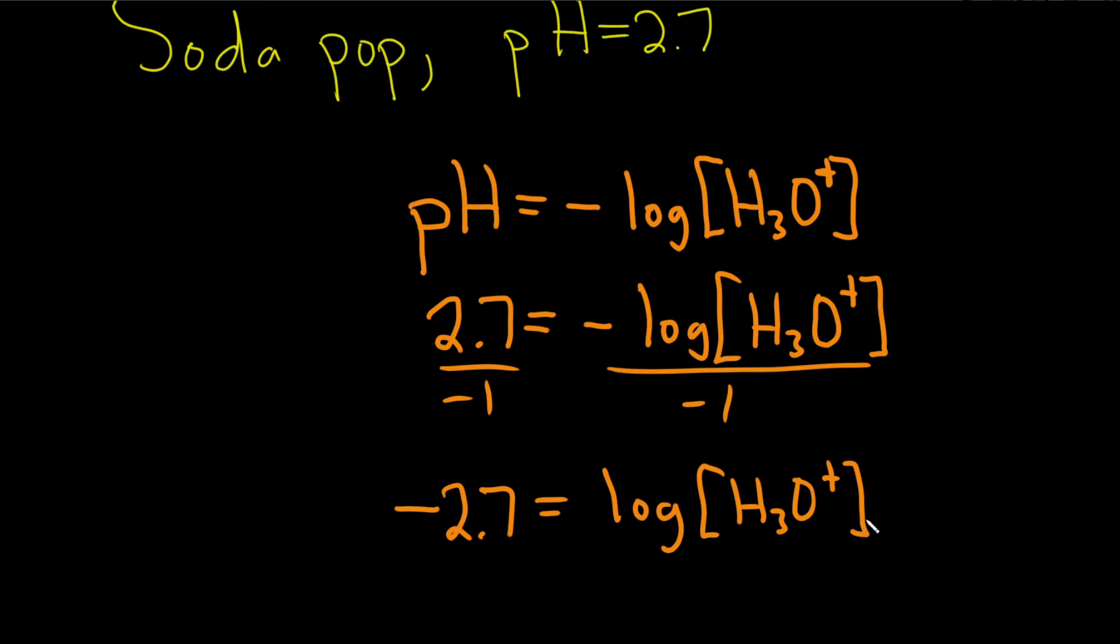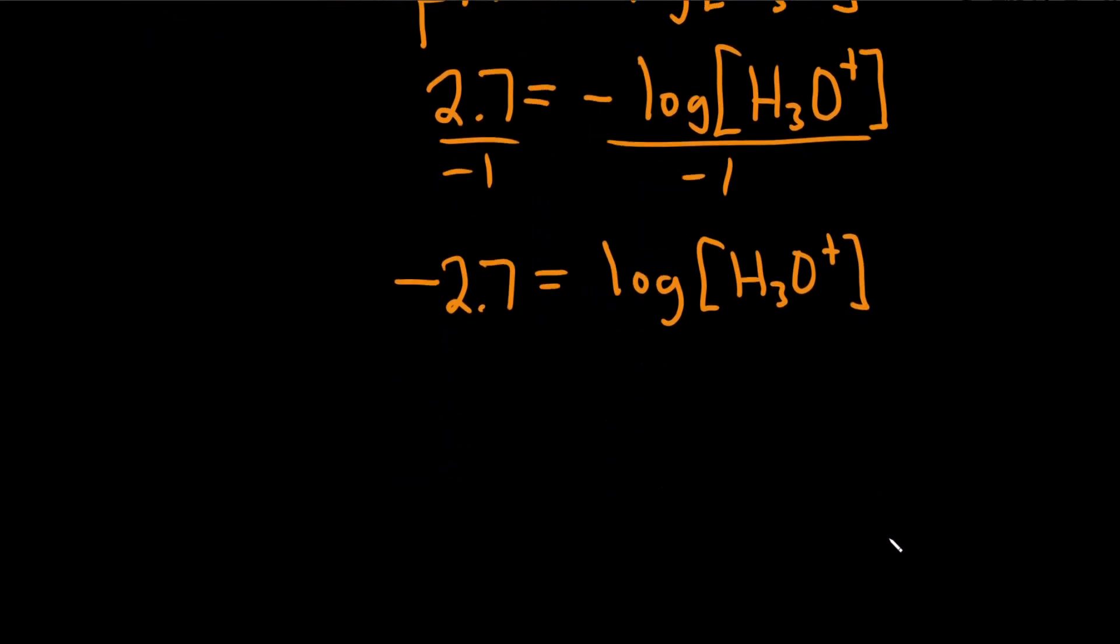Now we can get rid of the log. Whenever you write log, it's really log base 10. There's an invisible 10. So basically what you do is you put a 10 here, and you put a 10 here. You're exponentiating. This whole thing is the exponent. And what happens is when these numbers are the same in math, this goes away.